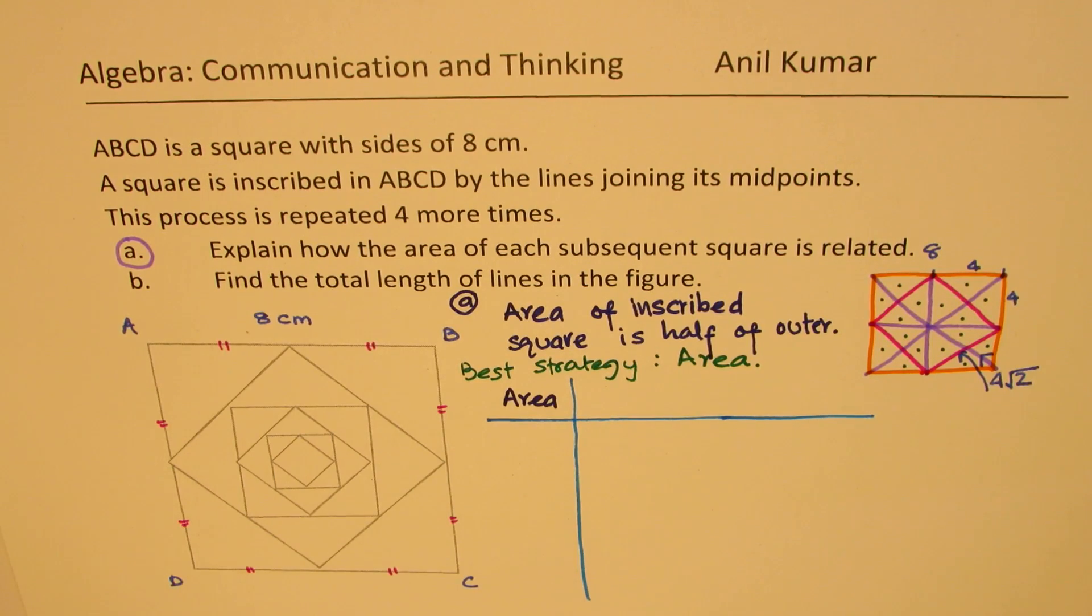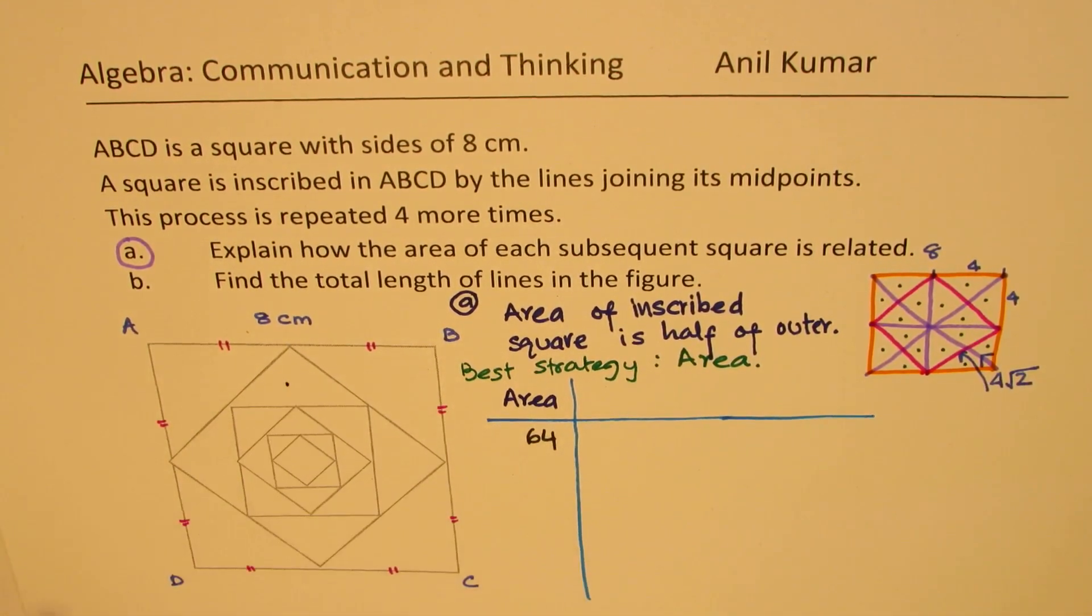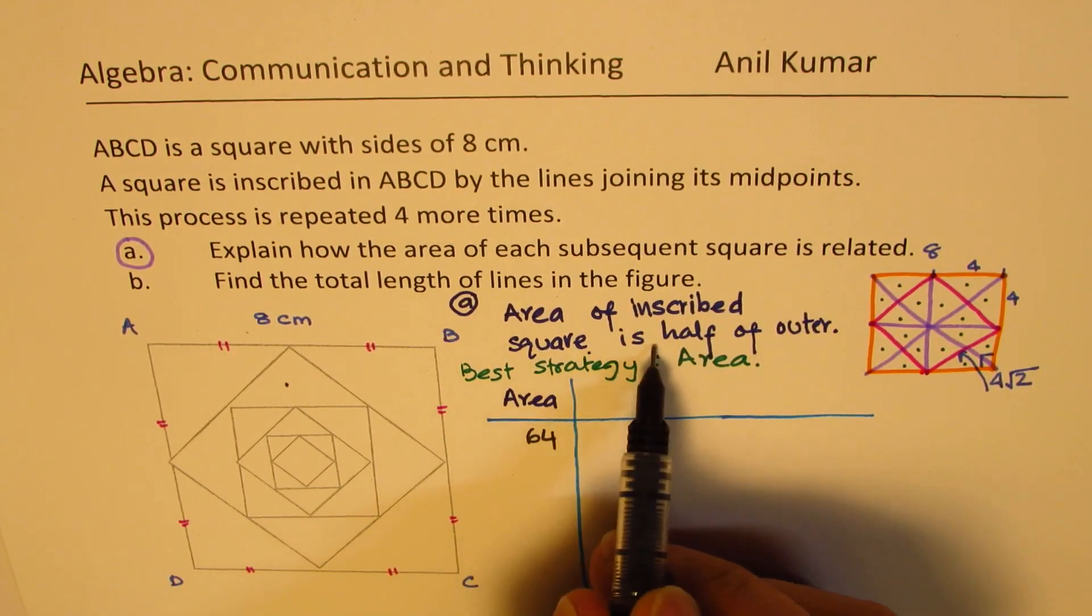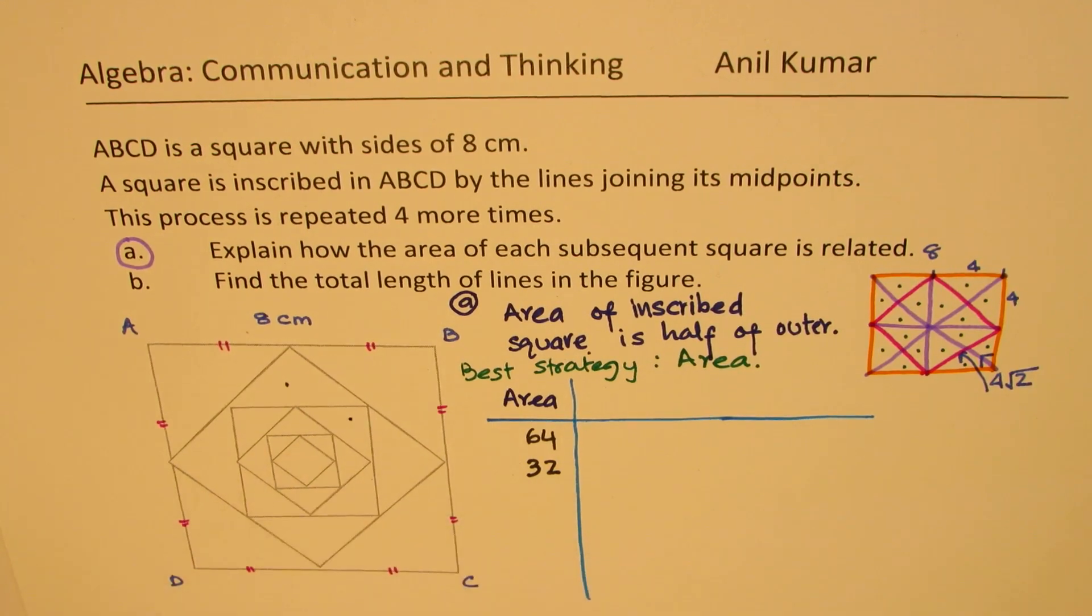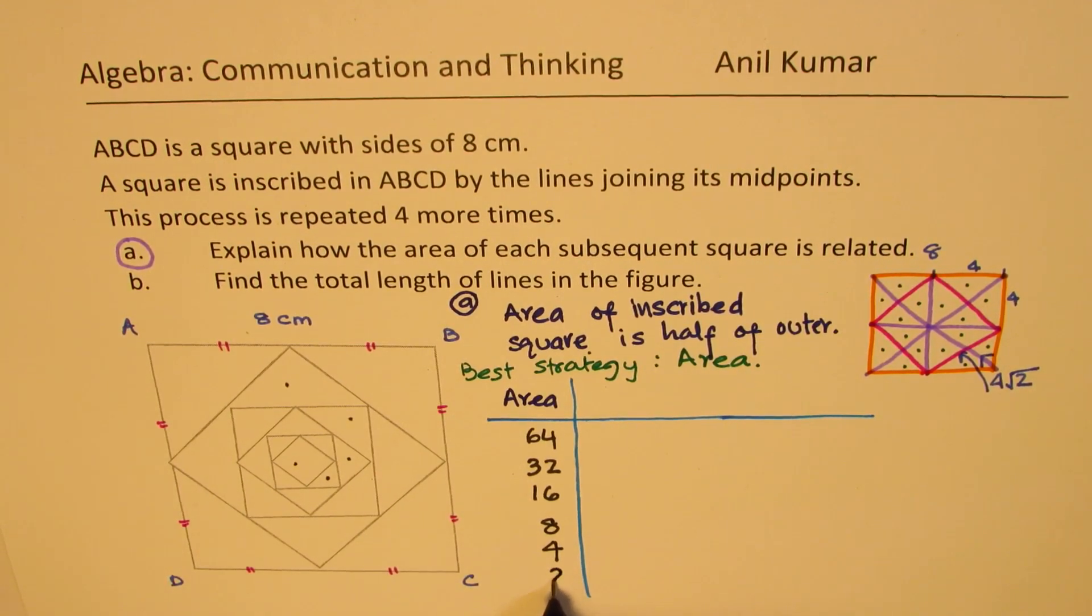First let's find the area of each square. Starting with the outer one which is 64 since we are given that the side is 8. The outer one is 64. Now next one will be half of 64 since we know that is the relation. Area of inscribed square is half of the outer. So the next area will be 32. And then we get into this one which is going to be half of 32, which is 16. Then we get into this one which is half of 16 which is 8. And then we get into that one which is half of 8 which is 4. And then we get into the last one whose area is 2. You get the idea. So the area is becoming half.